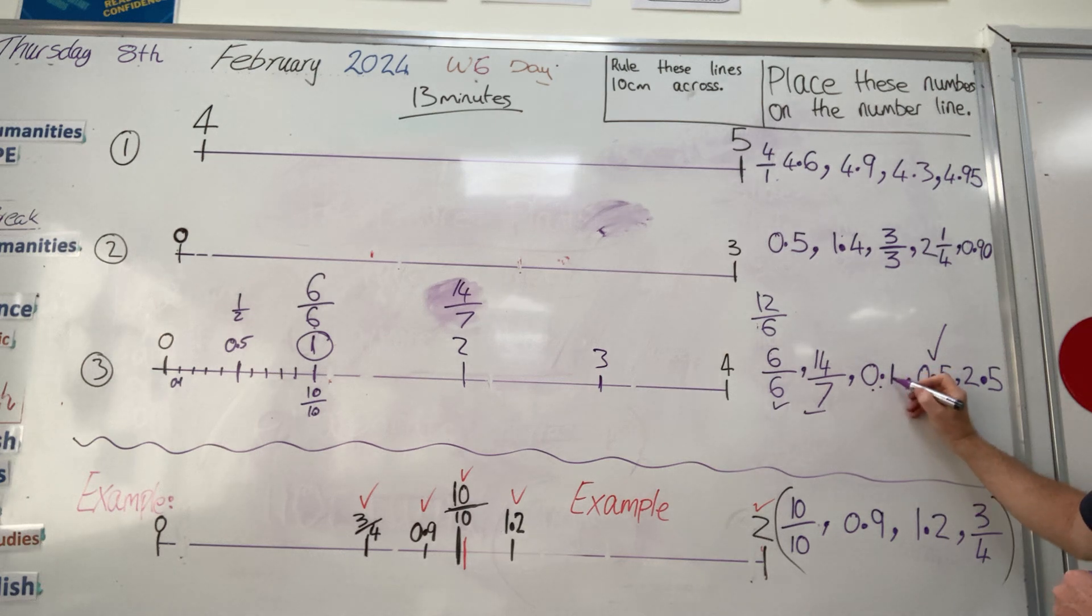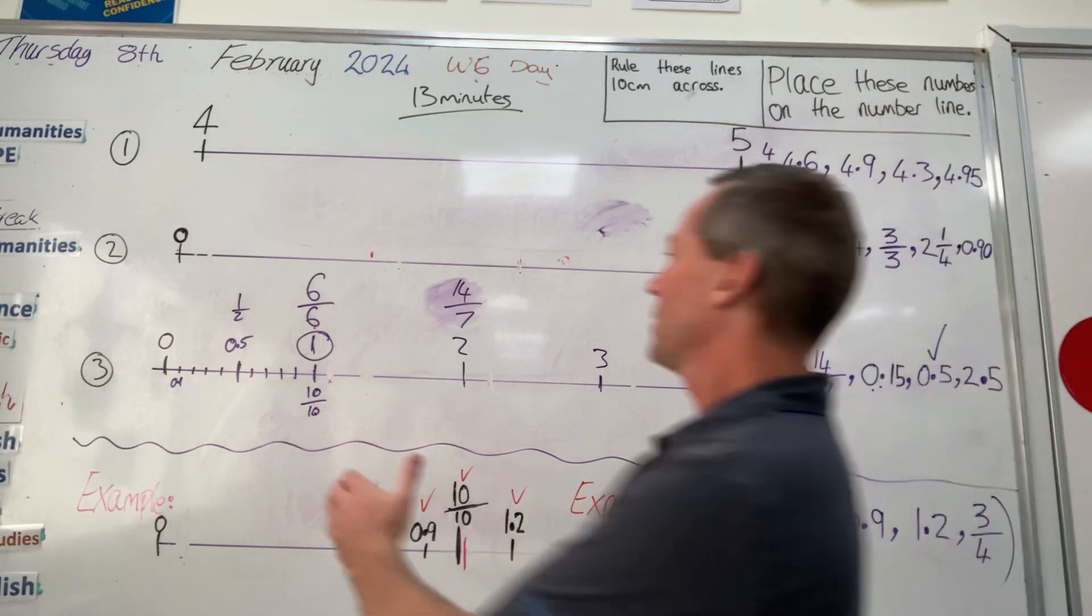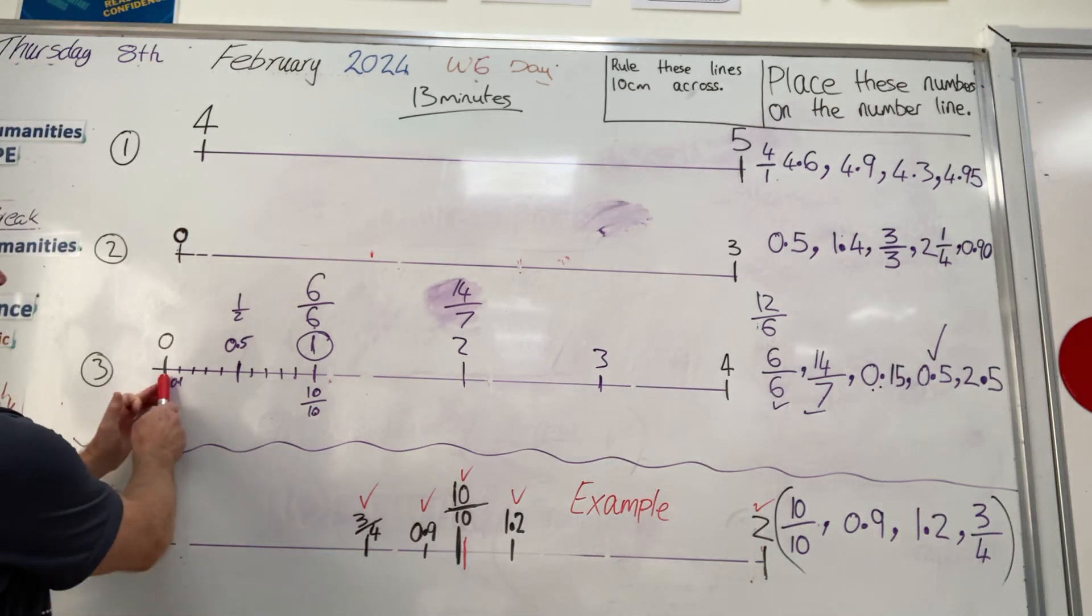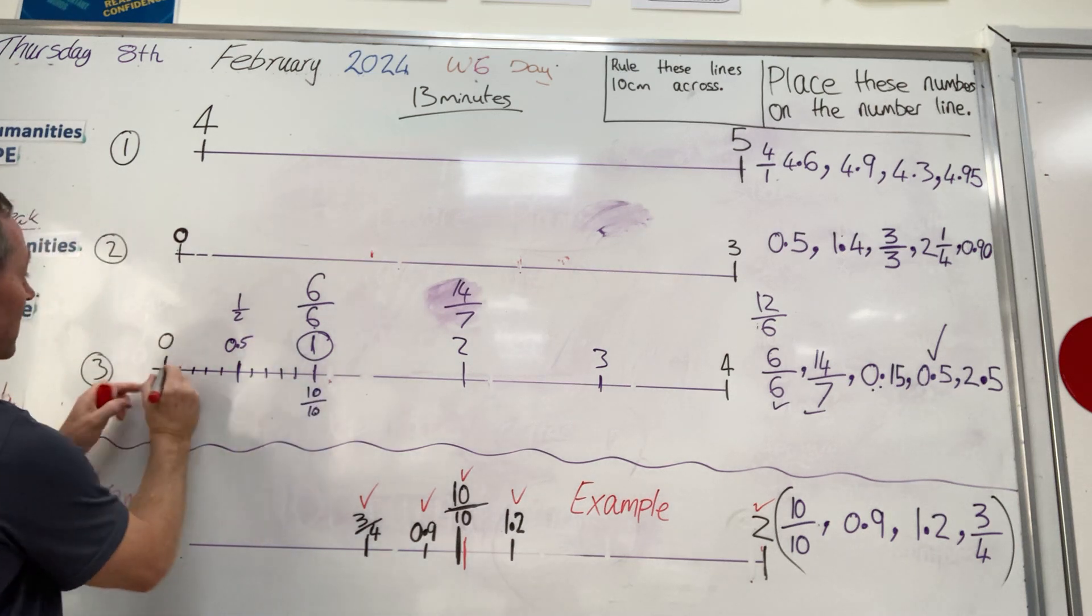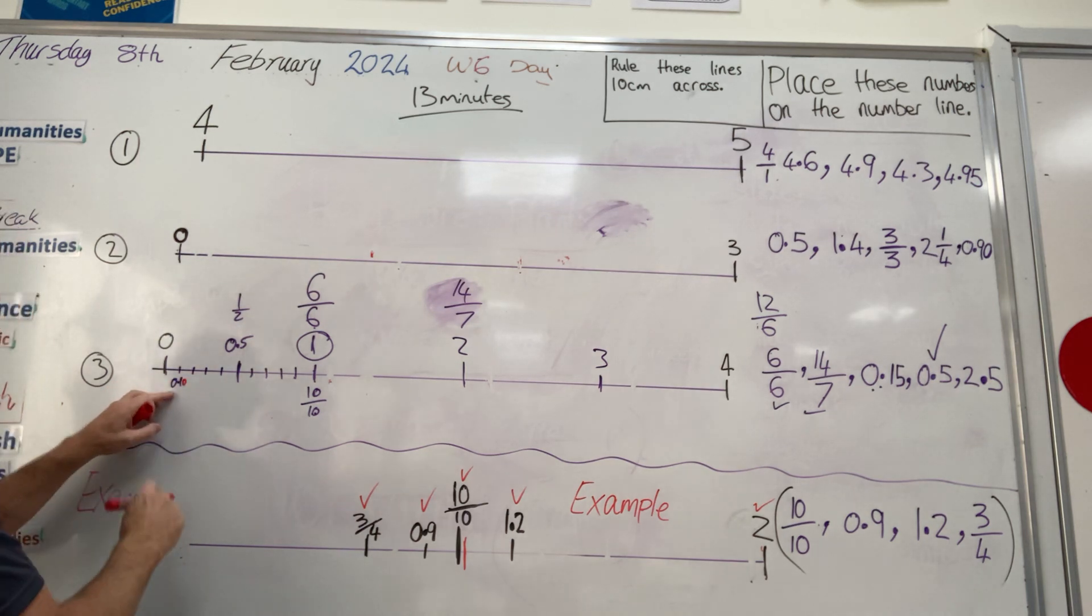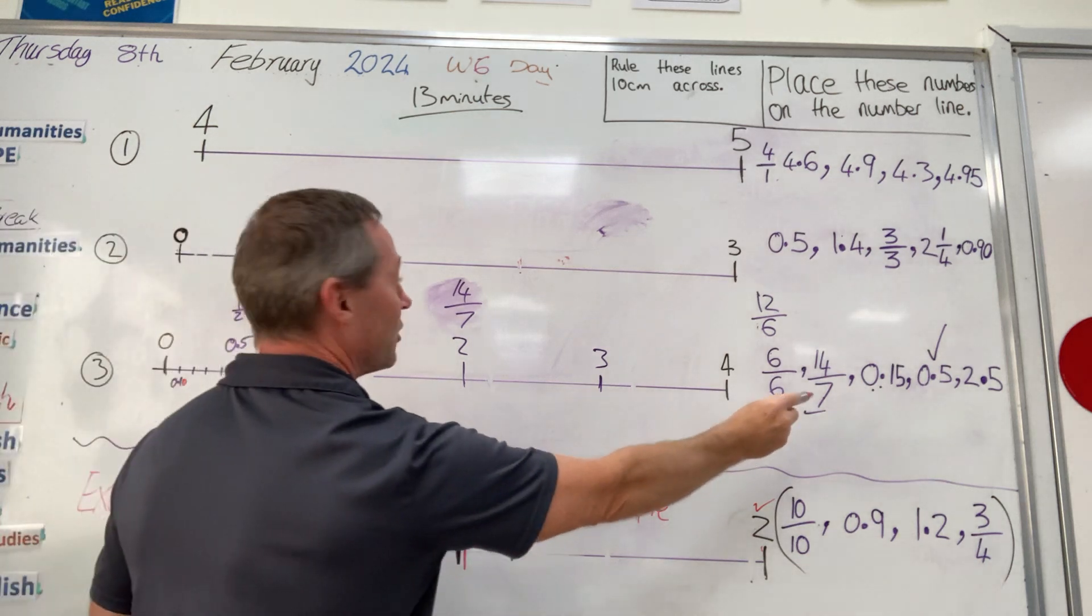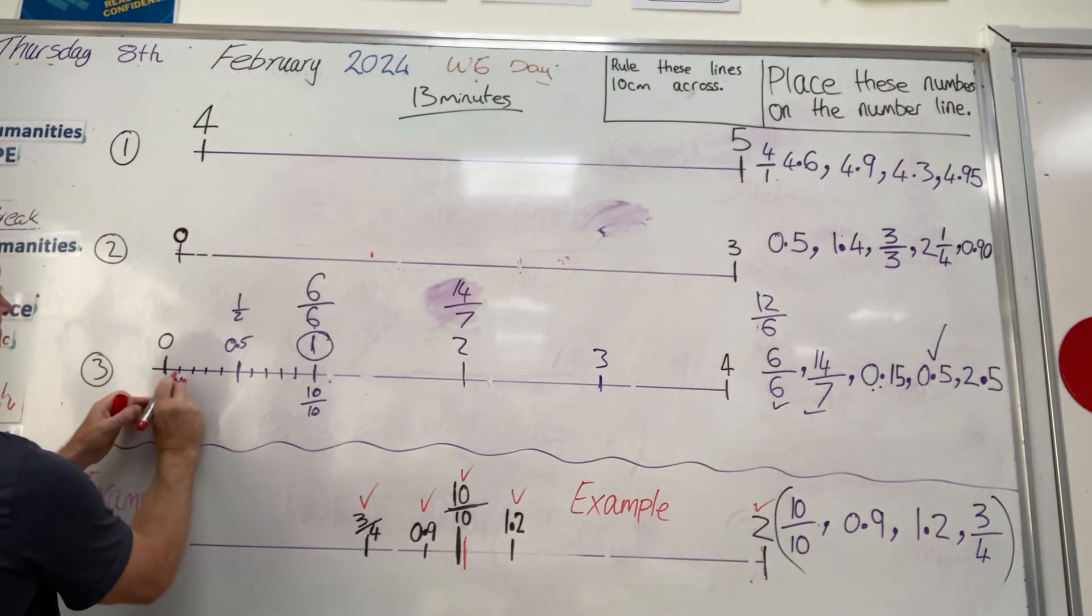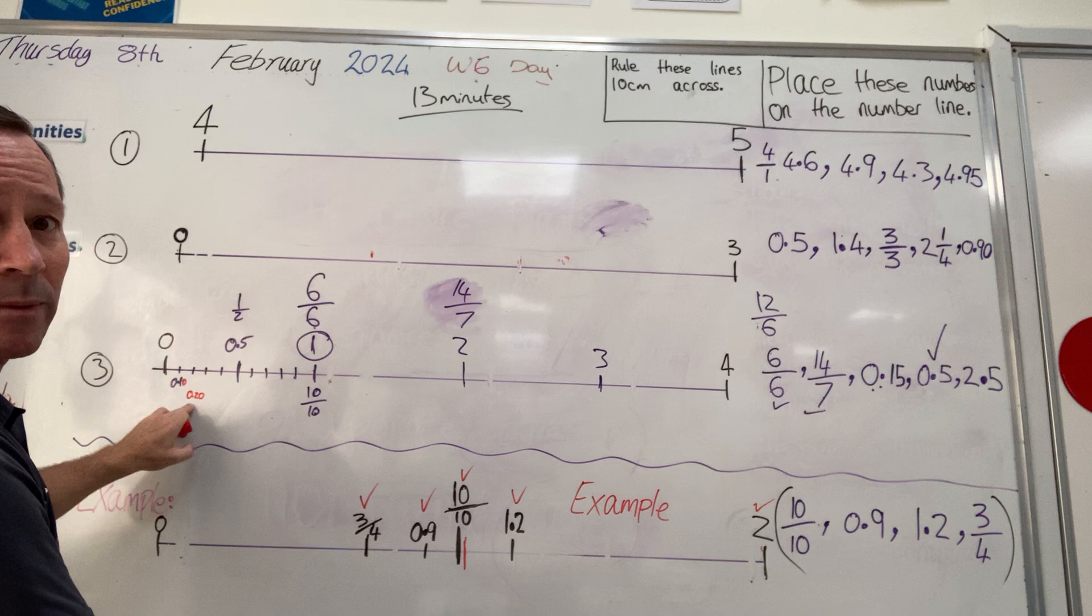Now, if this one here, 0.1, had a hundredths, 0.15, we're dealing with 15 hundredths. In which case, between 0 and 10, I'm going to actually break them up into 100 slices. So between 0 and 0.1, I could actually just put a 0 on the end, because then we're dealing with hundreds. 0.10, 0.20, 0.30.